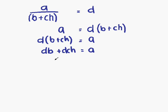So the next best thing to do is take this DB and move it onto the right-hand side. So DB means plus DB. If we move it onto the right-hand side, it becomes minus DB. So we have DCH on the left. We still have A on the right. Plus DB becomes minus DB.